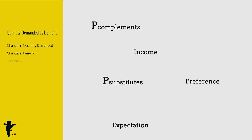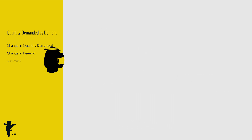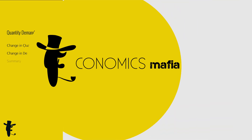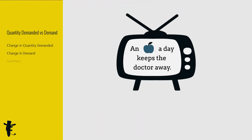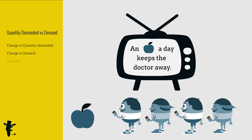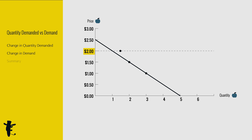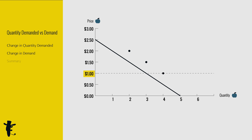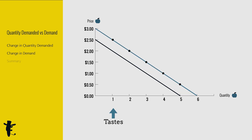Remember, there are other factors affecting demand as well. Suppose we see this advert on TV today. Before you realize, there are more people wanting to buy apples at every price. Apples are good for health! At $2, there are more people wanting to buy apples. At $1.50, and at $1 — basically at every price. So the entire demand curve shifts to the right. In econ speak, we say this is an increase in demand.